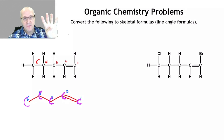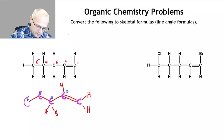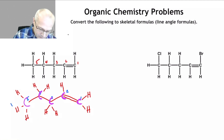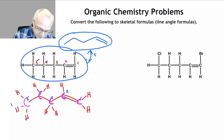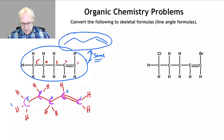Remember, every carbon has to have four bonds. This carbon already has two, needs two more. This carbon already has three, needs one more. This carbon already has two, needs two more. This carbon already has two, needs two more. And this carbon already has one, needs three more. So now I've taken my skeletal formula and expanded it — this and this are the same molecule: 1-pentene.